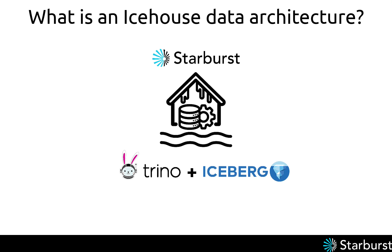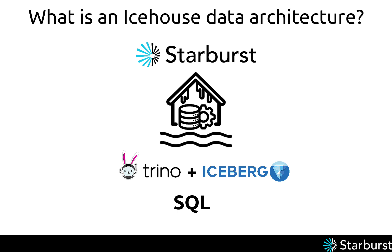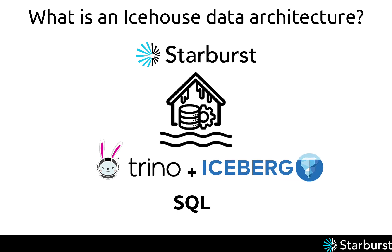Altogether, an ice house architecture using Starburst Galaxy provides a powerhouse of capabilities, all built on an open architecture at every level. It allows you to use SQL and an easy, intuitive interface to perform complex, powerful operations. It leverages the full power of Trino and the full features of Iceberg. It's the smartest, most advanced data architecture available today, and we are confident it represents the future of big data as we know it.